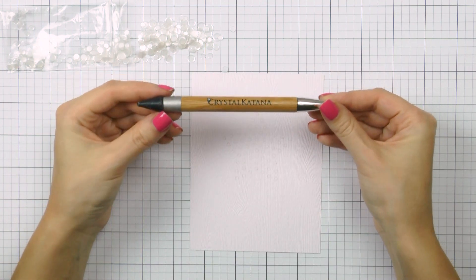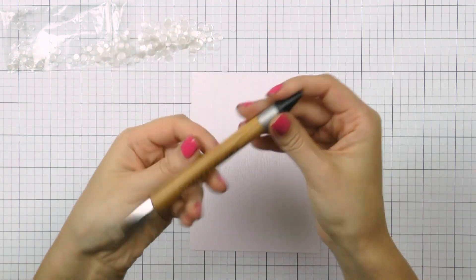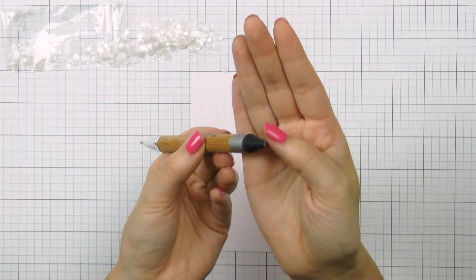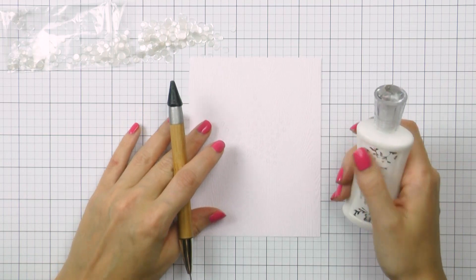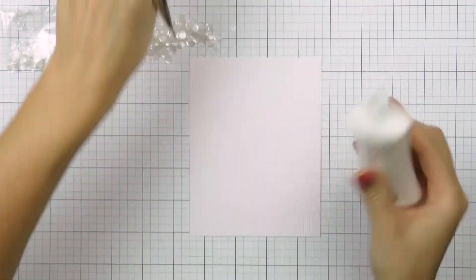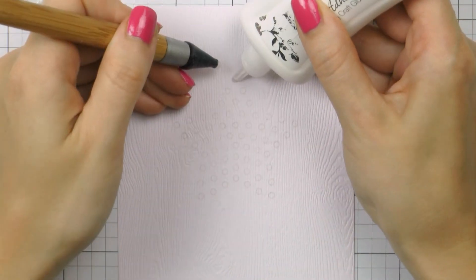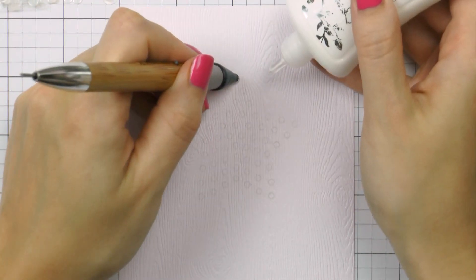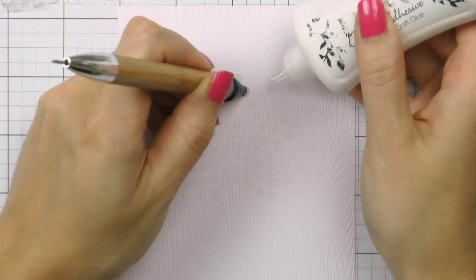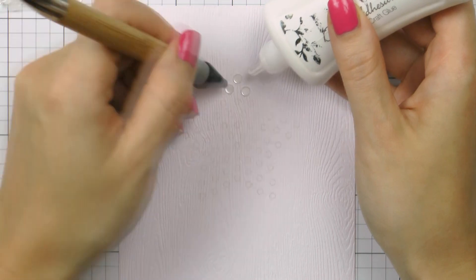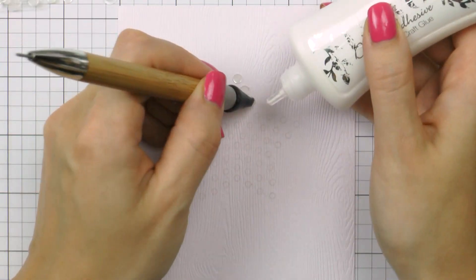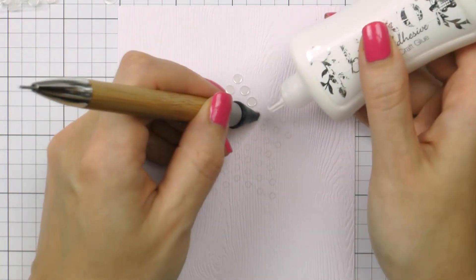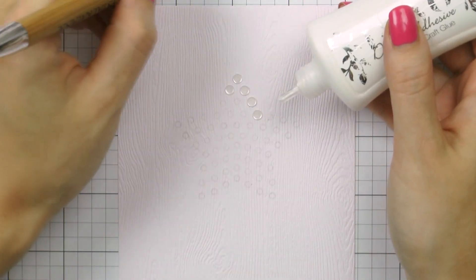Another must have tool for this technique is a pick up tool. Here I have a crystal katana tool, I always use it when I work with tiny embellishments. It really is a must have as it's not that easy to pick up these little pieces with your fingers and let alone position them properly or precisely on the project. There are other tools that are similar to this one so you don't have to use this exact tool, but just any tool that will help you pick up the pieces and place them exactly where you need them on your project.